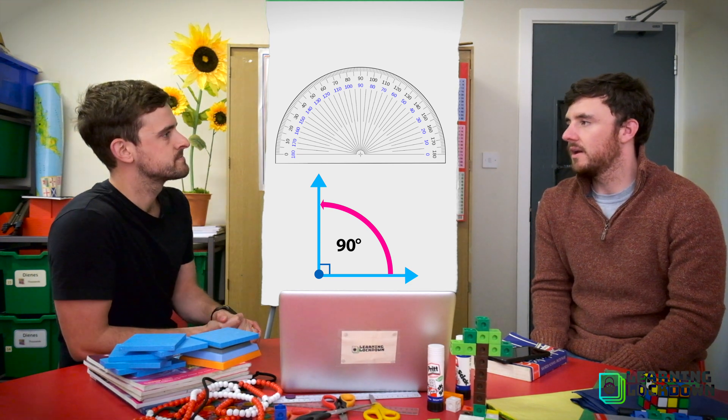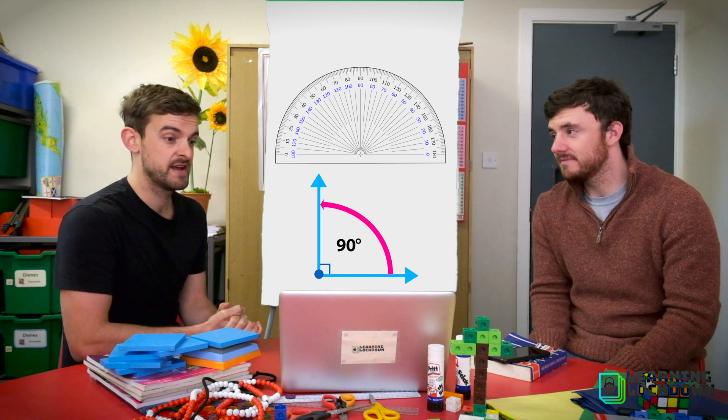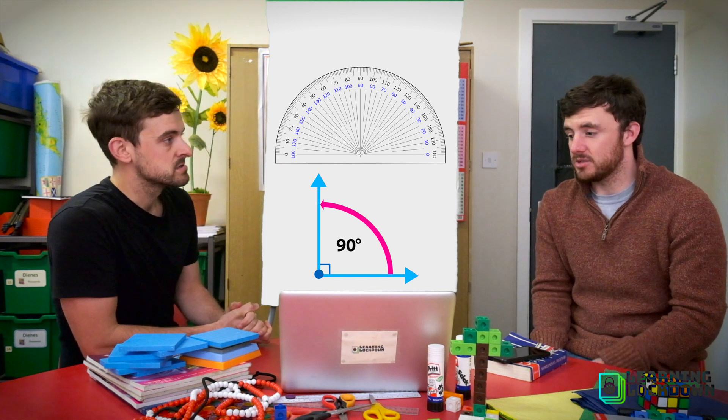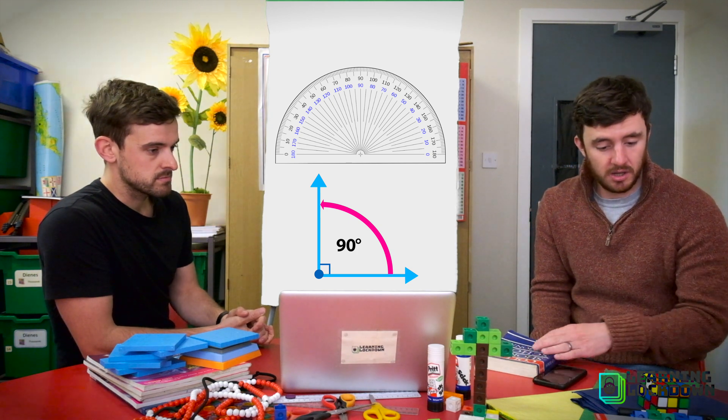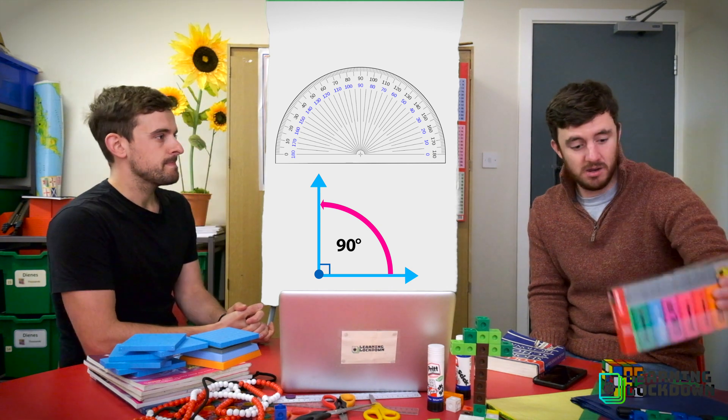And where might you find some? On the corners of things like a square or a rectangle. Perfect. Any around our table? There's some books here, my dictionary's got them, this Rubik's cube has got right angles at the end, this box of highlighters has right angles loads.